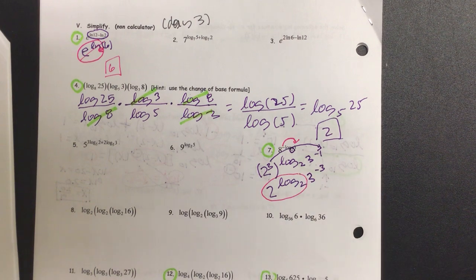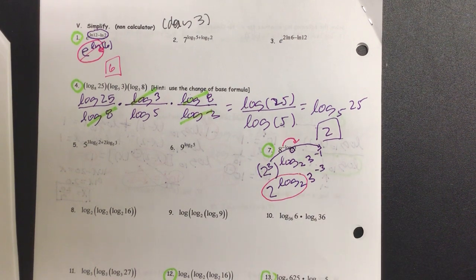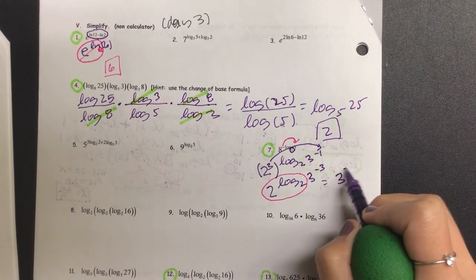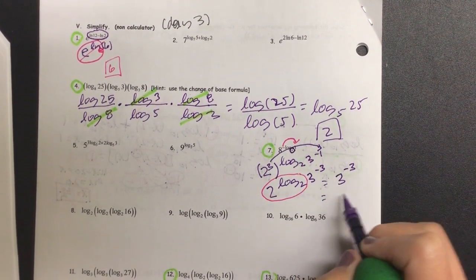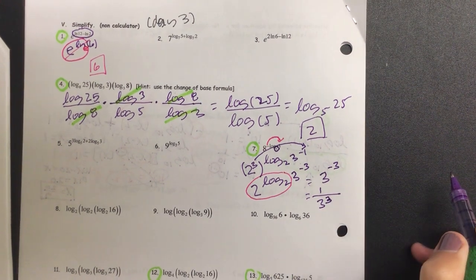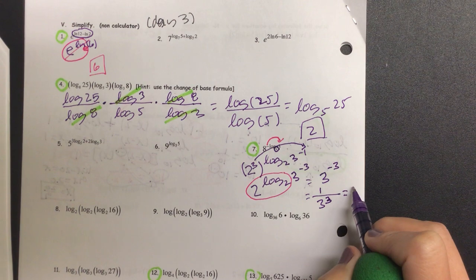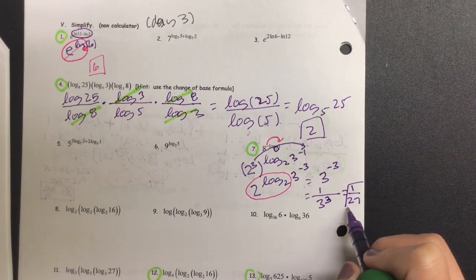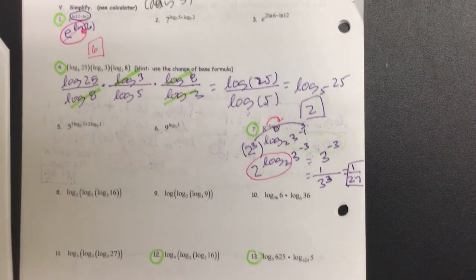2 logs. We have little number 2, big number 2. They cancel out. So we simply have 3 to the negative 3, which is technically 1 over 3 to the 3rd. What is 3 to the 3rd? 1 over 27. Did someone say 9? Stop it.